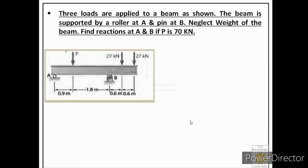Today we will solve one more numerical on equilibrium of a particle. Let us read the statement. Three loads are applied to a beam as shown. The beam is supported by a roller at A and a pin at B. Neglect the weight of the beam. Find reactions at A and B if P is 70 kN.